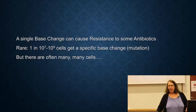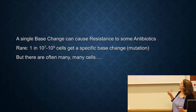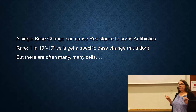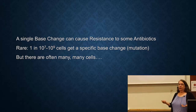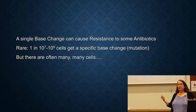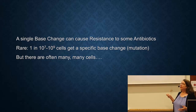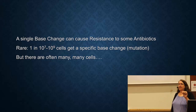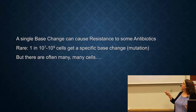A single base change can cause resistance to some antibiotics. These mutations are rather rare during DNA replication — on the order of one in 10 to the 7th or one in 10 to the 9th cells. But there are many, many cells; one of those little colonies has like 10 to the 7th cells. So when you have such big numbers, this small number isn't so small.